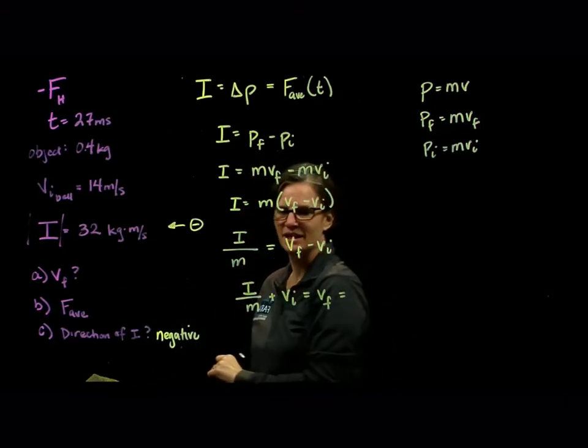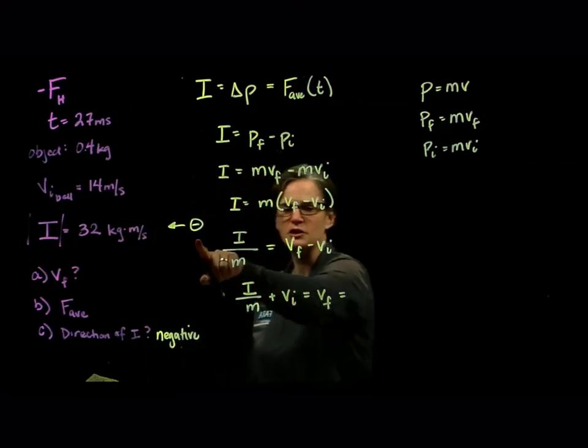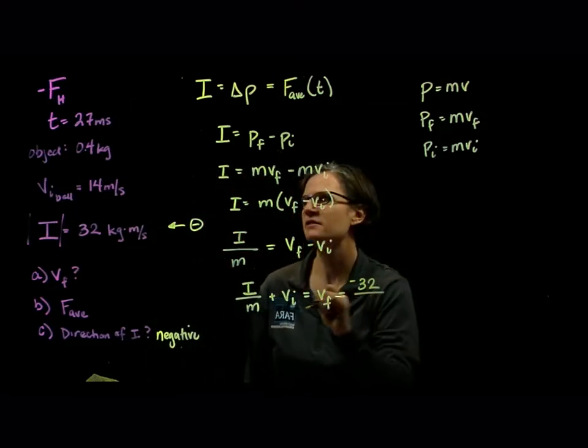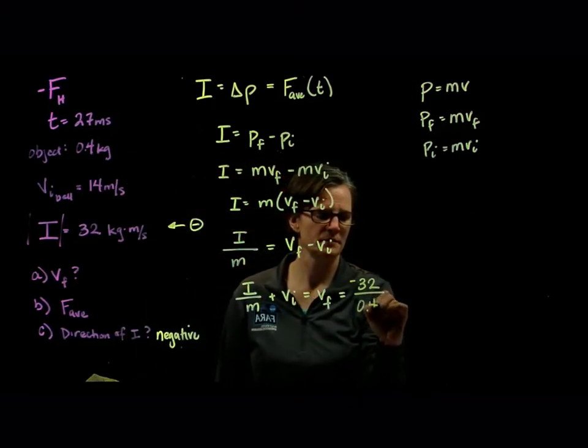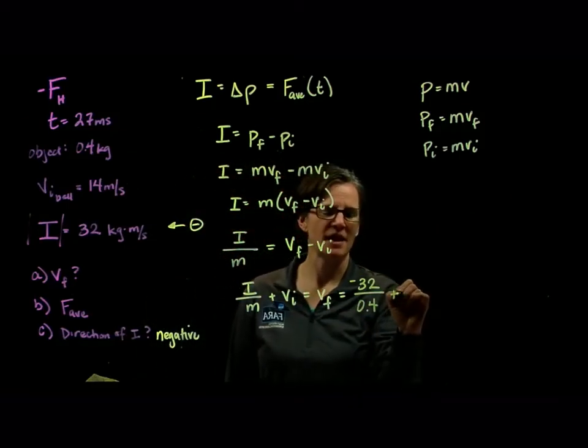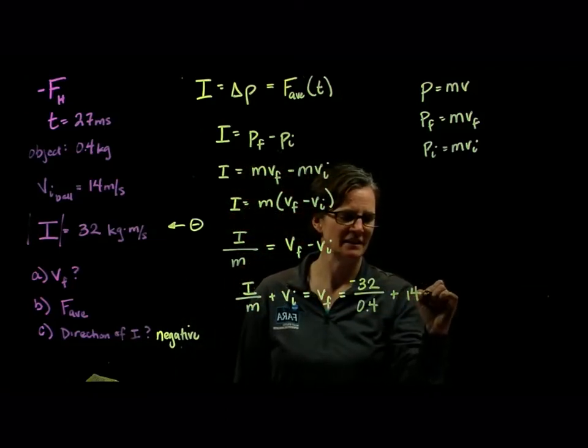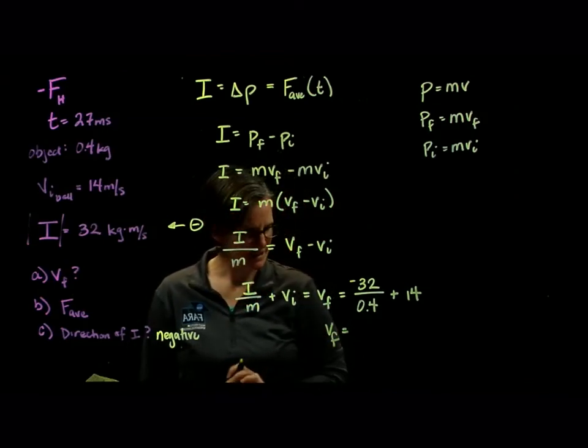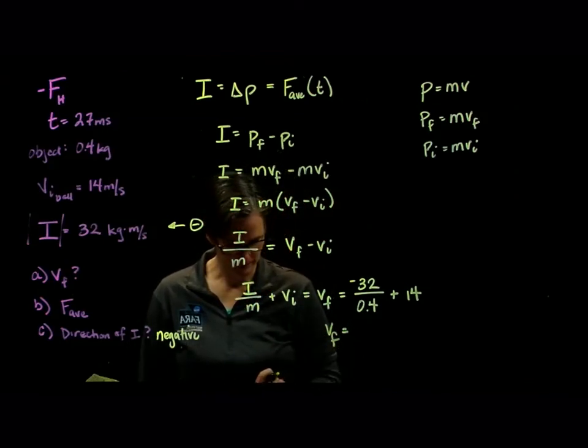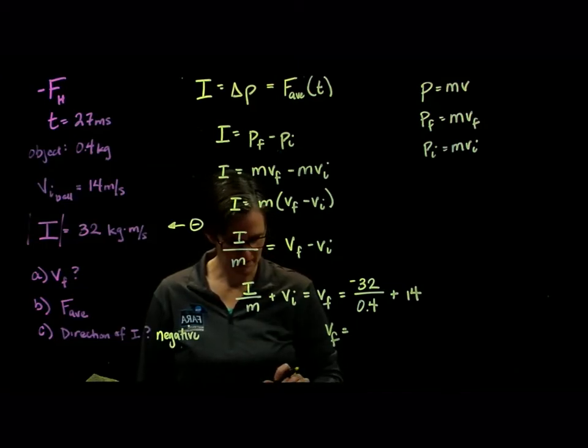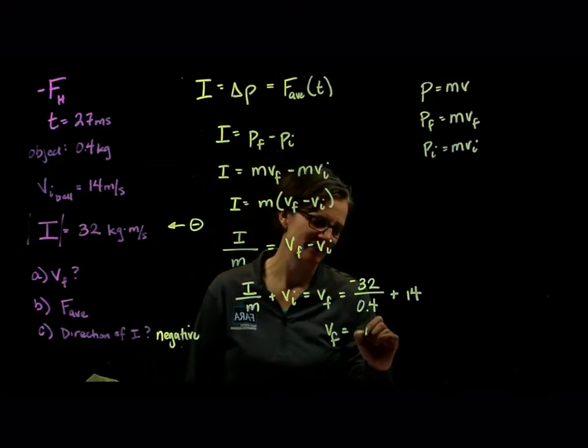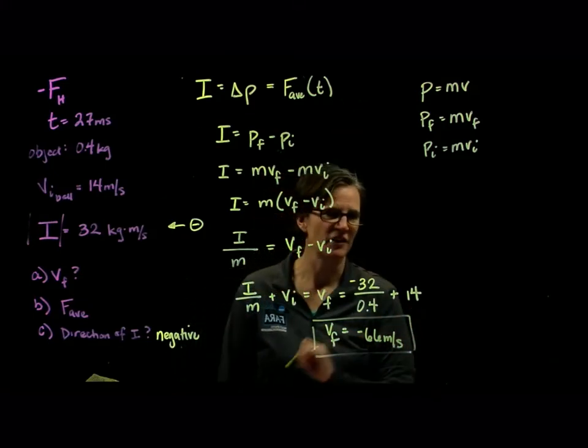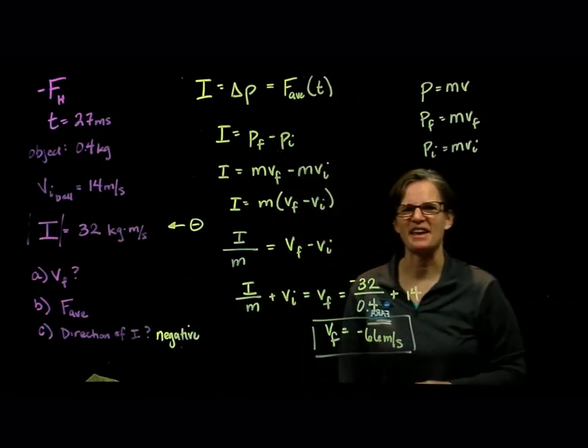All right, so let's start plugging in our numbers. We have our impulse of 32, but it is negative. So we have minus 32 divided by my mass of 0.4, and then I'm going to add my initial velocity of 14. And I find that my final velocity is equal to negative 66 meters per second. So just using and manipulating that impulse relationship.